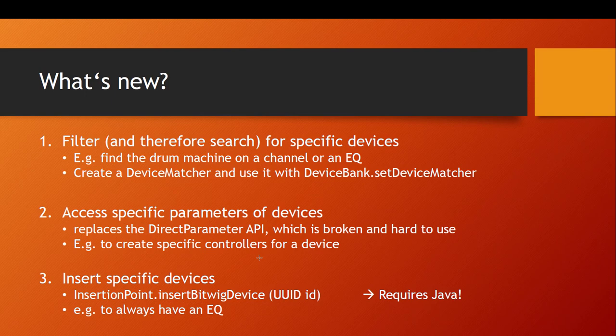You could build a fancy controller for the Polysynth or similar. There was already the direct parameter API for this, but it was really broken and hard to use with plenty of bugs. This is now the much nicer way, and it works not only with VSTs but with all devices loadable in Bitwig. The third aspect is that we can insert a specific device — Bitwig devices, VST2, and VST3 — but this requires Java development since you need to create UUIDs. This tutorial will therefore use Java.